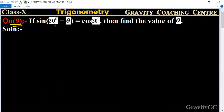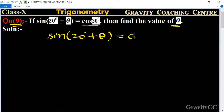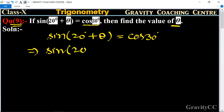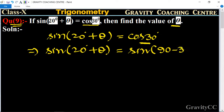If sin(20° + θ) is equal to cos 30°, find the value of θ. Given that sin(20° + θ) = cos 30°, we can write cos 30° as sin(90° - 30°).